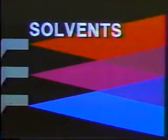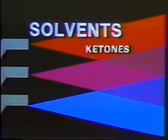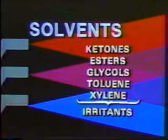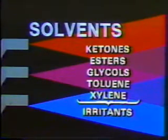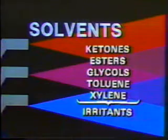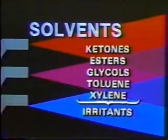Petroleum distillates are the most common paint solvents. Other examples are ketones, esters, glycols, toluene, and xylene. In general, these chemicals irritate the eyes, skin, and respiratory tract. They can be particularly dangerous because many of them are colorless and look like water. At high concentrations, some solvents can cause headaches, drowsiness, and unconsciousness. Repeated contact with the skin can cause prolonged and severe dermatitis. This is often a problem where solvents are used for cleanup.